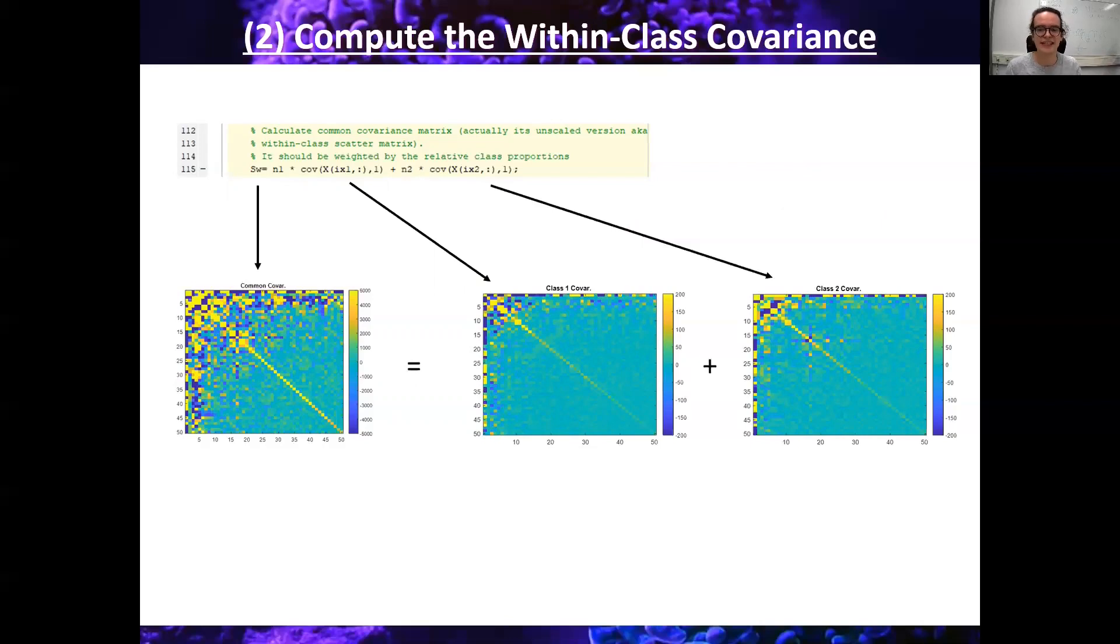Okay, to do this, we need to see how the data varies between channels. And this is where we compute the covariance, which you can do with this function called COV, which stands for covariance. And what we want to do today, we want to get this common covariance matrix, which is the shared variance between the two categories. So we look at covariance for data set one, or for class one, and covariance for class two. And we sum them together to get the common covariance, which we call SW here.